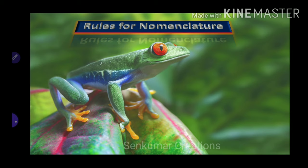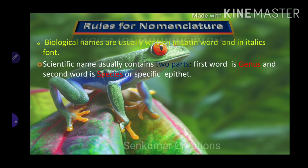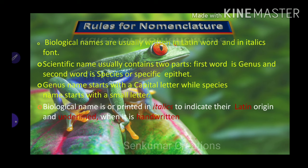There are some rules for nomenclature. Biological names are usually written in Latin and in italics form. A scientific name usually contains two parts: the first word is the genus and the second word is the species or specific epithet. The genus name starts with a capital letter and the species name starts with a simple letter. Biological names are printed in italics to indicate their Latin origin, and underlined when handwritten.